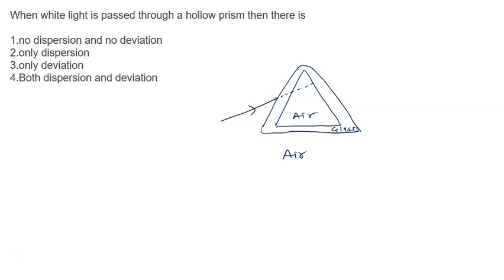Both situations will happen - there will be dispersion as well as deviation, and light will bend like this. Different colors bending differently. Then again it is traveling from dense medium to rare medium, so different colors will travel in the air with the same speed.